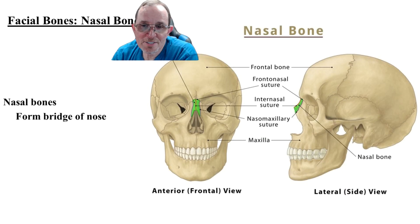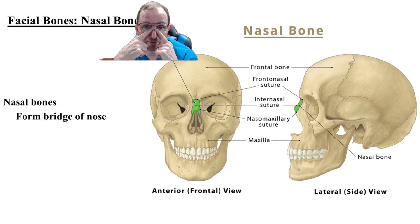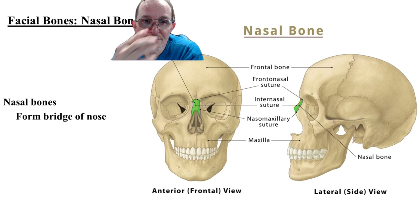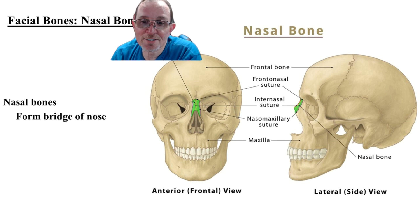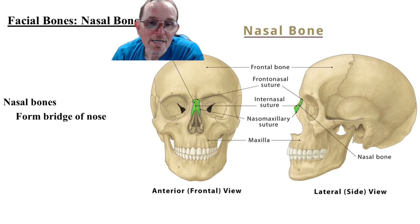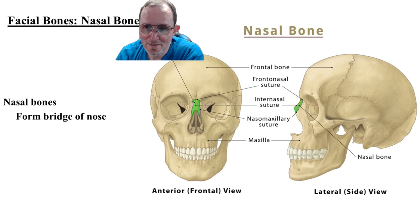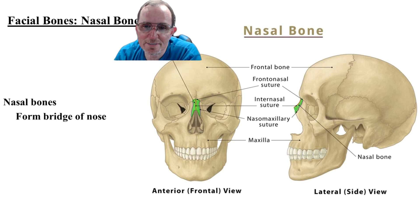The nasal bone is a very tiny bone just at the bridge of your nose. From the bridge of your nose down, it's basically cartilage. The actual bone is only this small part right in the center — two fused pieces — and the rest of the nose bridge area is the maxillary bone.